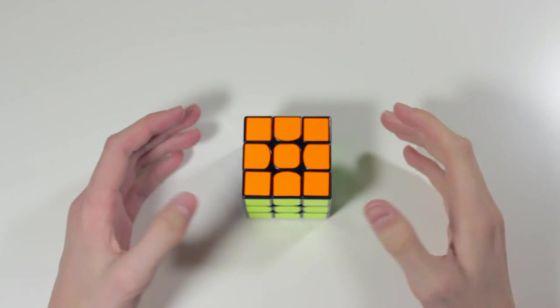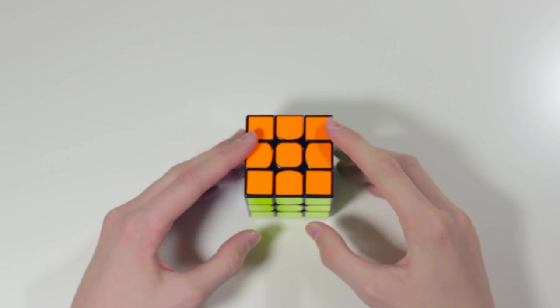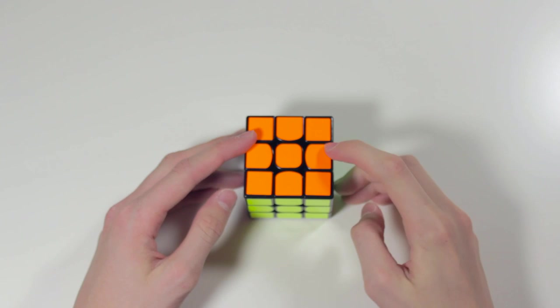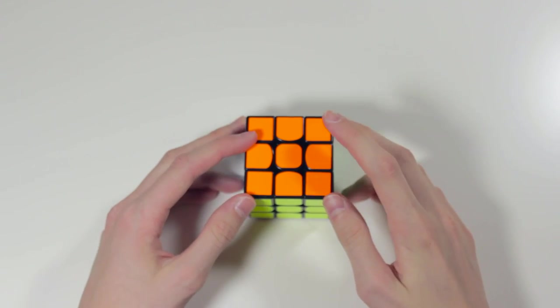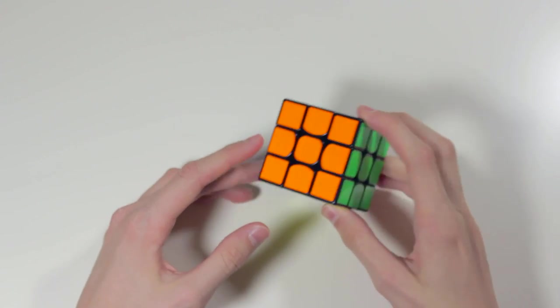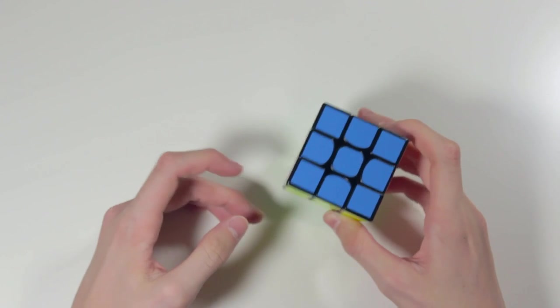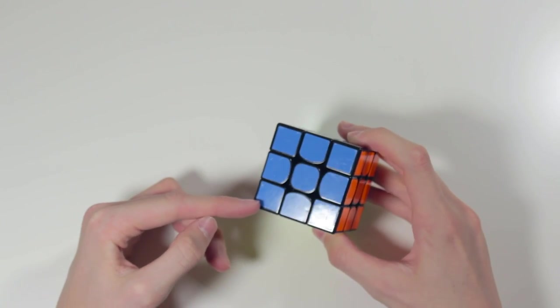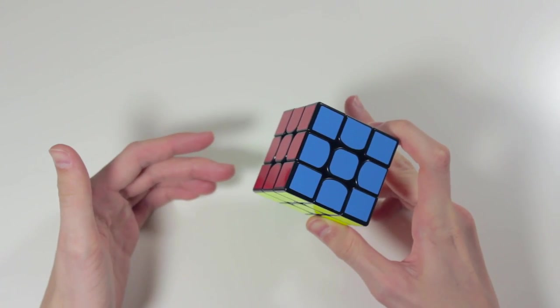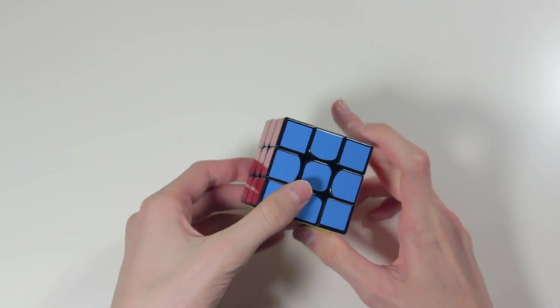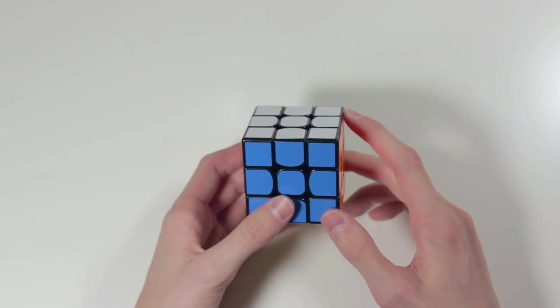Hey guys, so I know I haven't made 3x3 walkthrough solves in a really long time, but I am going to be making 5 for all of you today. The cube I will be using is the Yuexiao, I think that's how you pronounce it, and I actually won't be leaving the scrambles in the description just because I think it's more important that you pay attention rather than follow along, so let's just get into the first scramble.